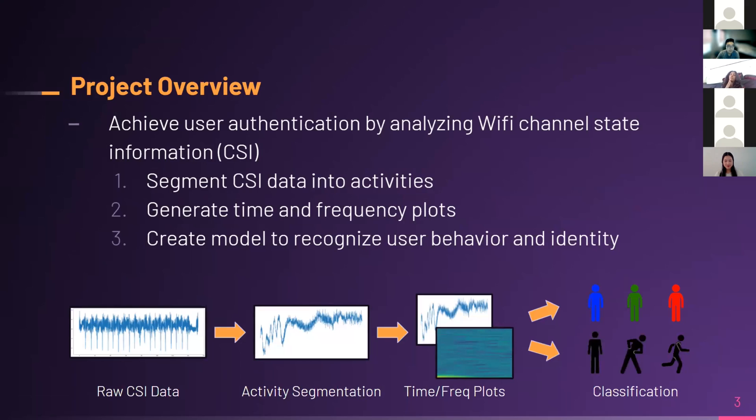So the project overview: the overall objective of our project is to achieve user authentication by analyzing Wi-Fi channel state information, which is also called CSI data. The CSI data is gathered from the signal sent between the Wi-Fi receivers and the transmitters, and this signal is susceptible to all the things that are in its environment, like furniture or a person moving around in the room. By using CSI data, we can theoretically achieve device-free authentication, meaning we don't need fingerprint readers, retinal scanners, or any sort of biometric scanner.